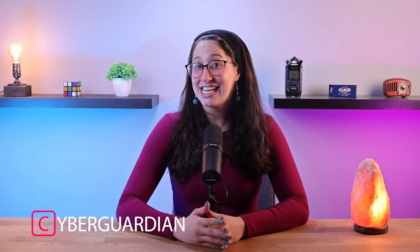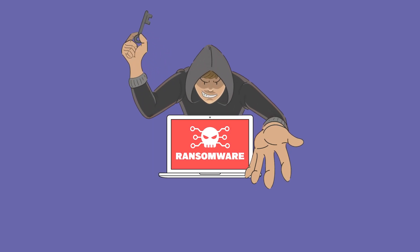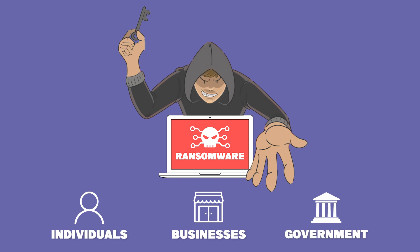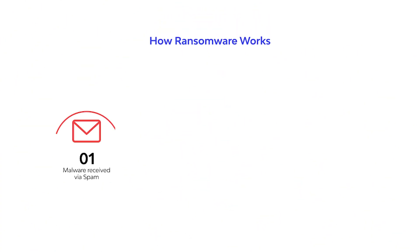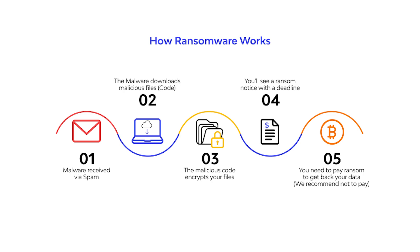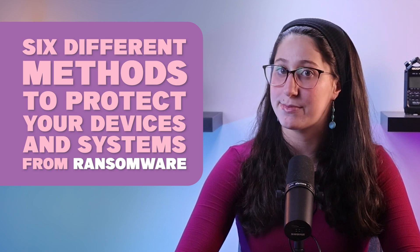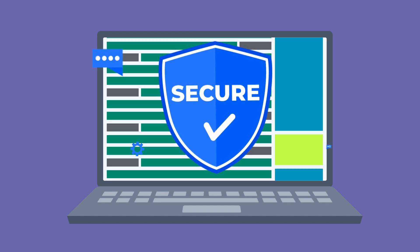Hey everyone, welcome back! In today's video, I'll be giving you six different ways to protect yourself from a ransomware attack. Nowadays, in the ever-evolving landscape of cybersecurity threats, ransomware has emerged as a significant threat, causing a lot of trouble for individuals, businesses, and even governmental organizations. A ransomware attack can cripple systems, compromise sensitive data, and demand a hefty ransom for the restoration of services. As the threat landscape becomes even more sophisticated, organizations have to adopt proactive measures to defend against ransomware attacks. We're going to be taking a look at six different methods to protect your devices and systems from ransomware, other than the most obvious one, which is installing antivirus software.